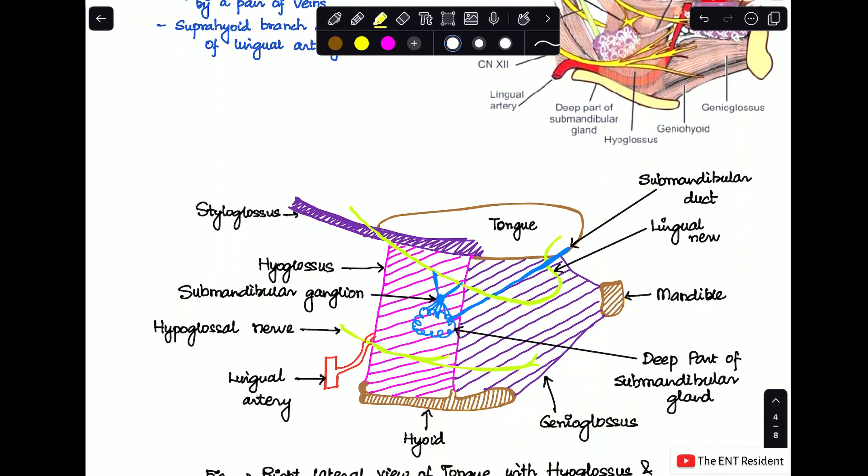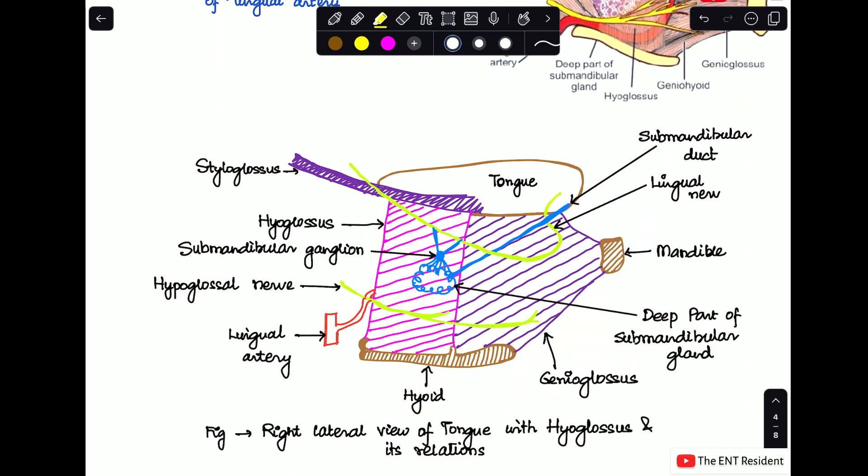I'll show you in the image over here. This is the right lateral view of the tongue. As you can see in the image, the pink one that you see is the hyoglossus muscle. Now you'll see in the image that from above downwards, if you had to see, the first thing is the mucous membrane of the side of the tongue. Next comes the styloglossus muscle. Next comes the lingual nerve, the green structure that you can see. Next thing is the submandibular ganglion, and you can see that the submandibular ganglion is hanging from the lingual nerve by two roots.